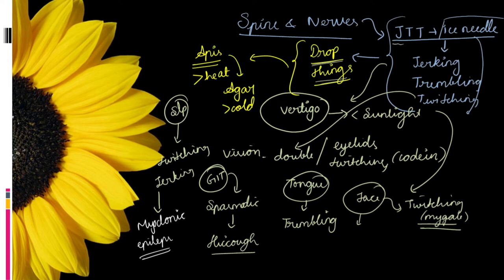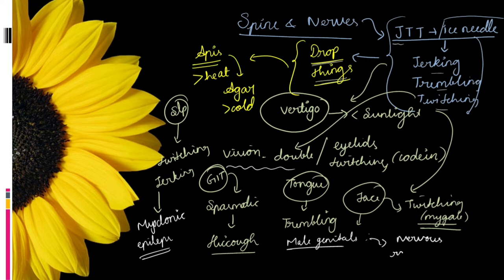To summarize the nerve symptoms: Babu has JTT plus ice needle sensation — jerking, twitching, trembling everywhere — leading to dropping things. He has headache and vertigo aggravated by sunlight, double vision, twitching of eyelids and facial muscles, trembling of tongue, spasmodic hiccough in GIT, and nervous prostration in the male genitals due to sexual excess.